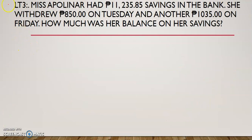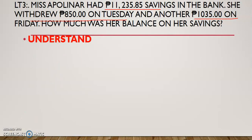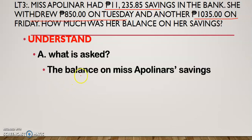Let us take another example — learning task 3. Ms. Napolinar had 11,235.85 savings in the bank. She withdrew 850 on Tuesday and another 1,035 on Friday. How much was her balance on her savings? Again, in understanding the problem, it would help you if you underline the important details. What is asked in this problem is the balance on Ms. Napolinar's savings.